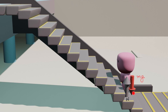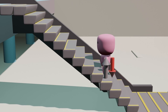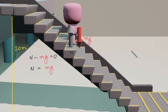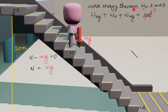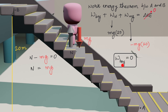As the boy is moving up with uniform speed, the net force on him is 0, so N - mg = 0, meaning N = mg. Writing the work-energy theorem between A (bottom) and B (top): work done by boy + work done by N + work done by mg = change in KE = 0. Work done by N is mg×20 and work done by mg is -mg×20. So the work done by the boy is 0 — if you are just standing on the escalator moving up, you do zero work.